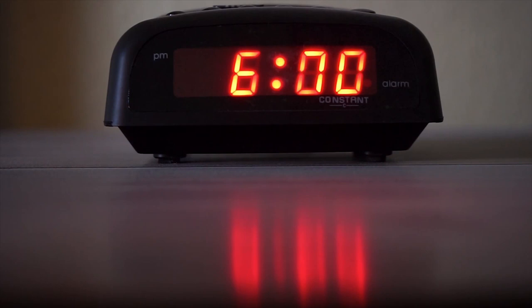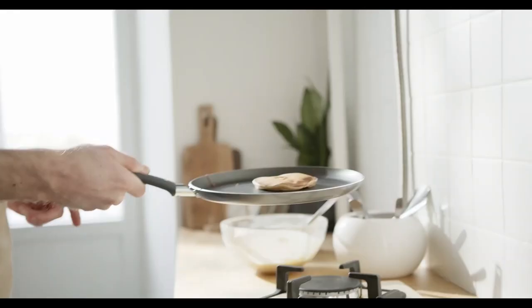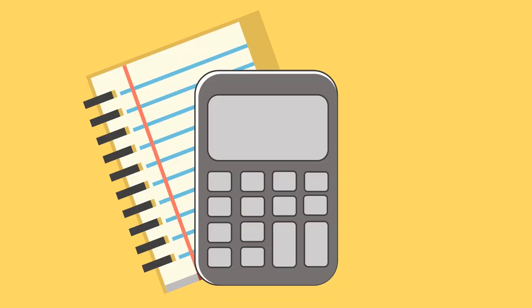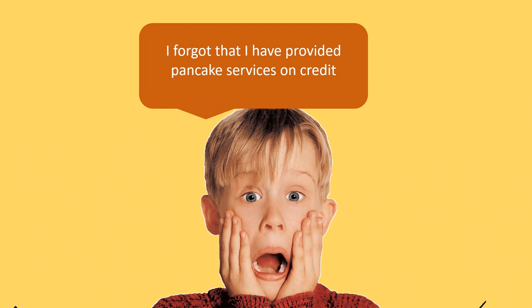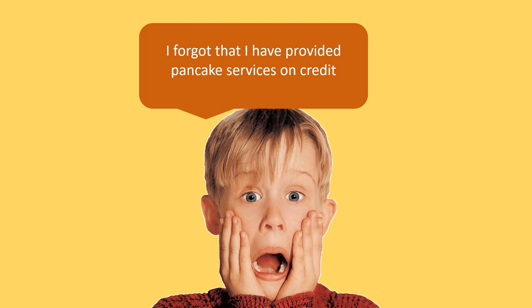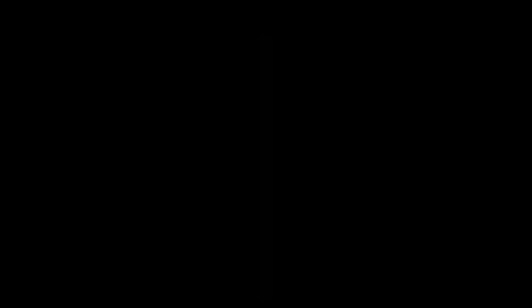Moving on to the big day, October 30th. I woke up at 6am and did whatever it takes — preparing the pancakes, selling the pancakes — with the hope that I can hit the sales I deserve. At the end of the day, I sold a total of 100 pancakes and created $125 in revenue. However, the problem is that all of my friends on campus used their credit cards, so they paid me on credit. I haven't received any cash yet. As I said before, whenever we see the term 'on credit,' we know it's not a cash transaction. So I will record $125 in my accounts receivable and $125 in my revenue.